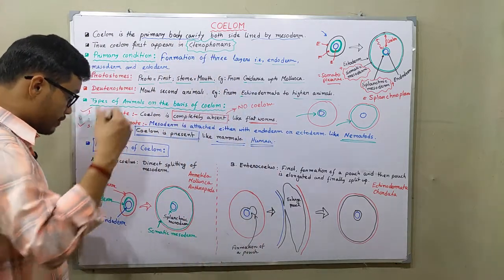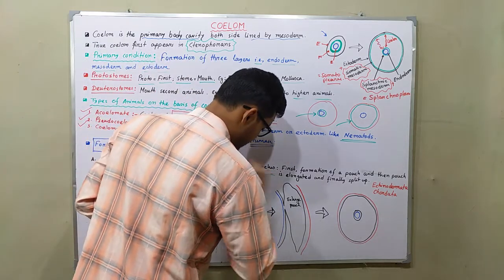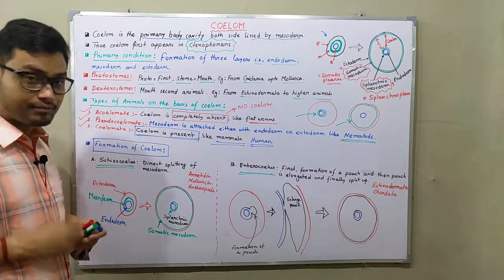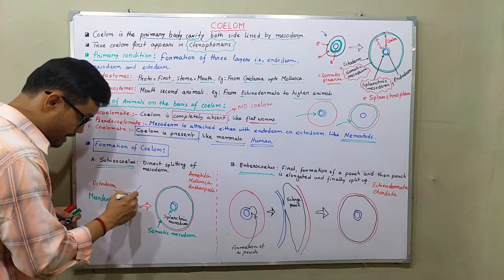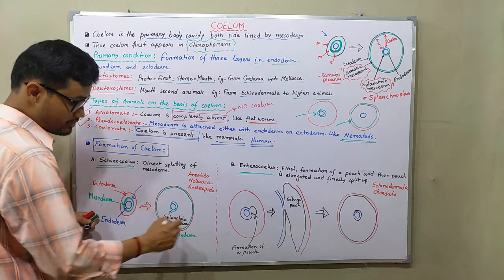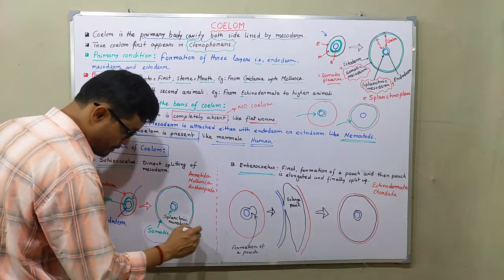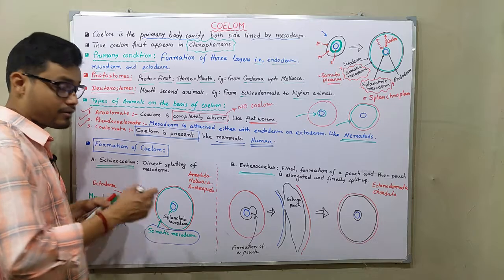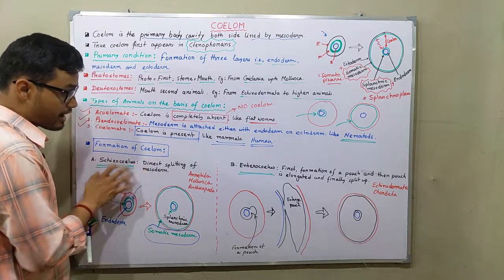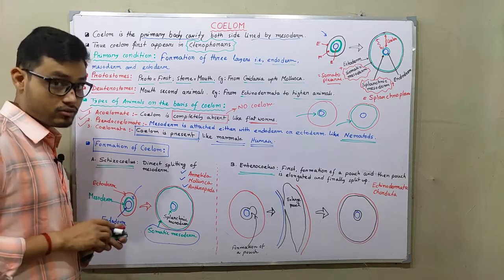In the formation of coelom, there are two kinds: schizocoelous and enterocoelous. In schizocoelous animals, the coelom is the product of direct splitting of mesoderm — the mesoderm directly splits, and one portion attaches with the endoderm as splanchnic mesoderm, and another attaches with the ectoderm as somatic mesoderm. Examples of schizocoelous animals include Annelida, Mollusca, and Arthropoda.